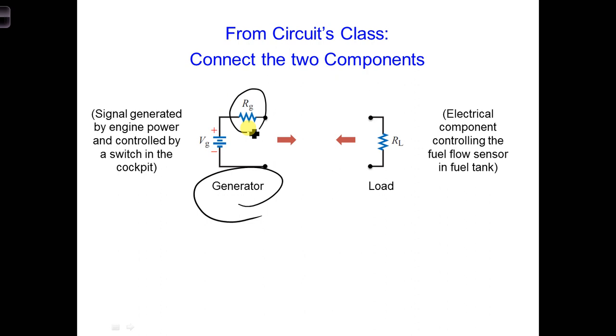We want to send an electrical signal from the generator to a load, which in our case is a circuit controlling the fuel flow sensor in the fuel tank. This load is shown on the right, and it is represented by a resistor, RL, because there is some power loss at the fuel flow sensor.